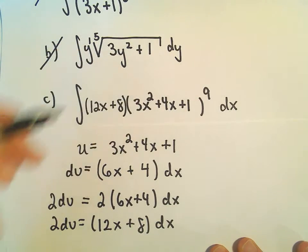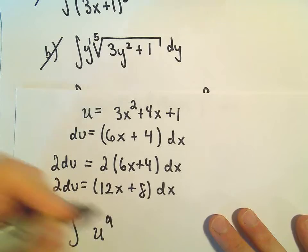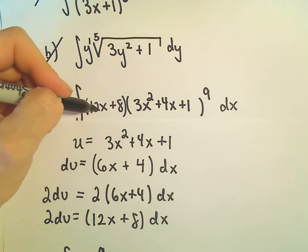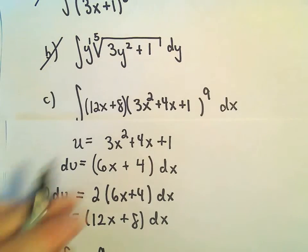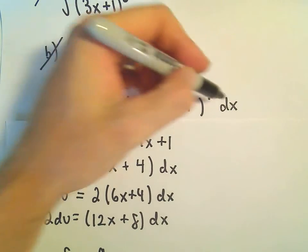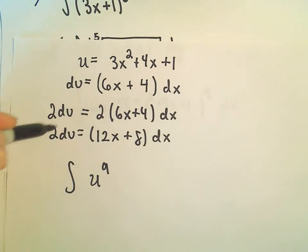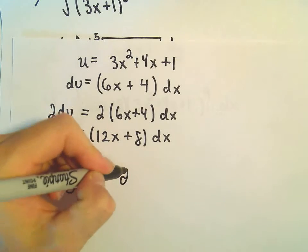The stuff in parentheses, I'm going to replace that with u. And then we still have to replace the 12x plus 8 dx. So the 12x plus 8 dx, we can replace that with 2 times du.